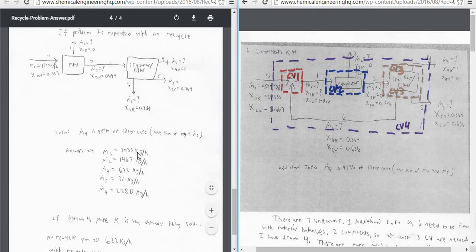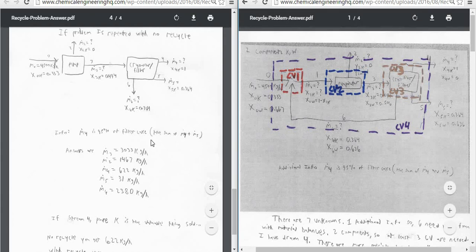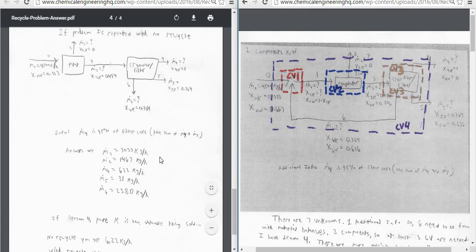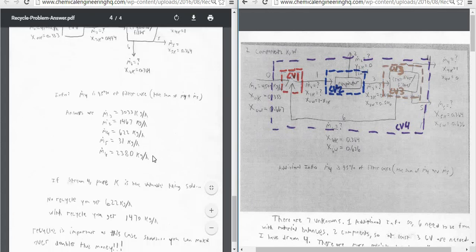So 3,033 kilograms per hour for M3, 1,467 for M2, 622 for M4, M5 is 31, and M6 is 2,380 kilograms per hour. And you can do that following the same procedure we just had, where you write control volumes and then solve them in order that is the most convenient.